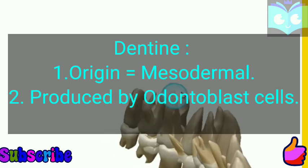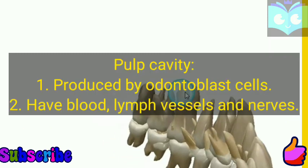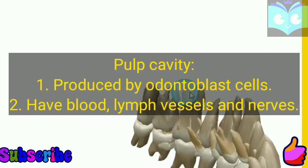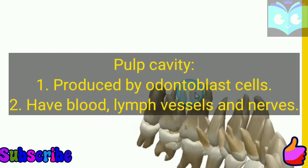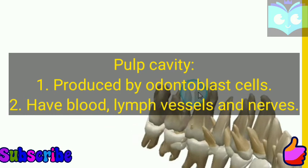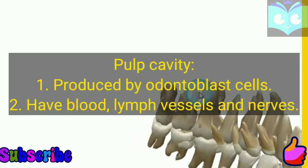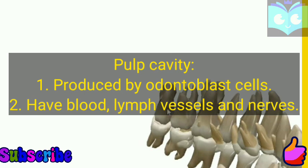The last region is the pulp cavity, which contains the nerves, blood vessels, and lymph vessels. The pulp cavity is also produced by odontoblast cells.